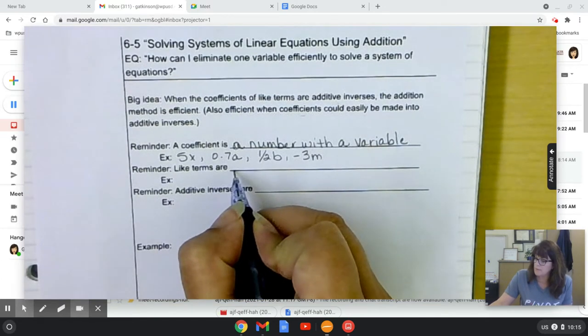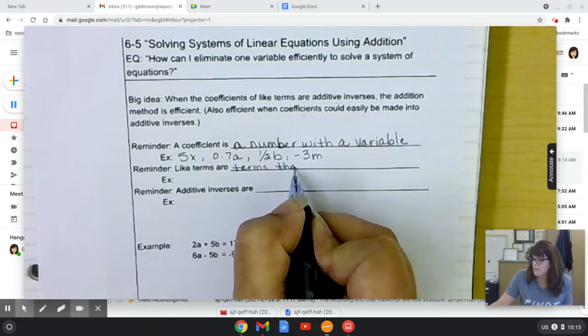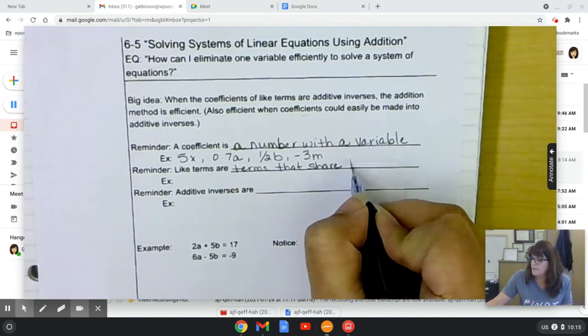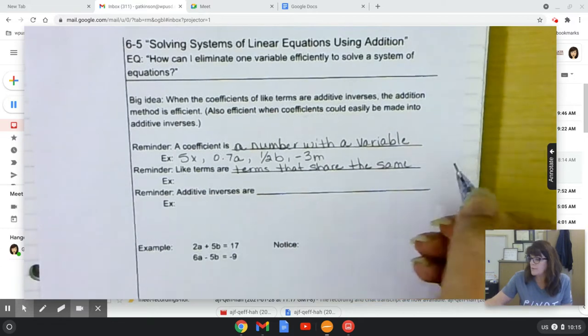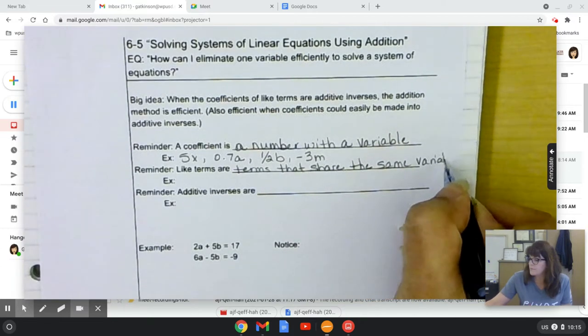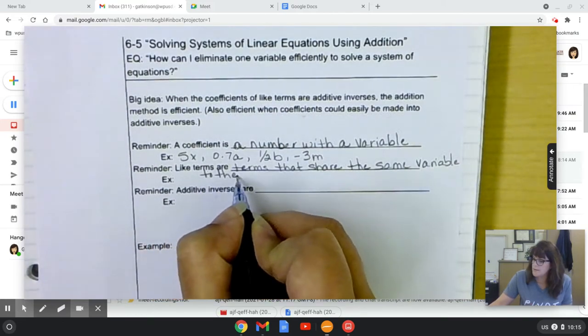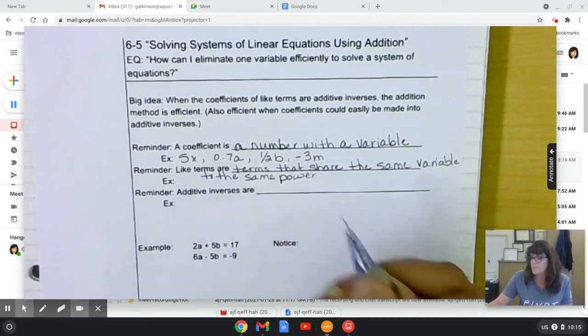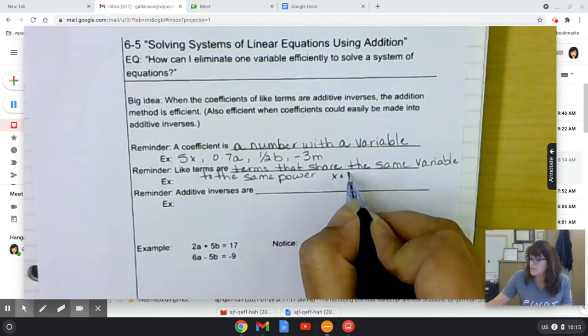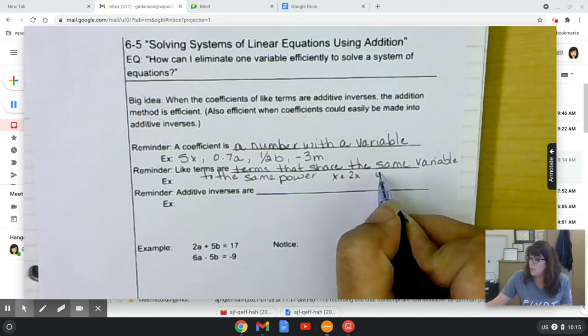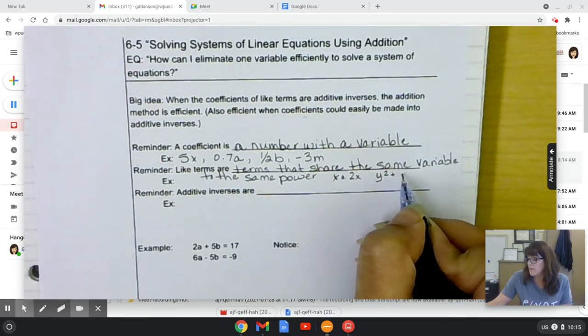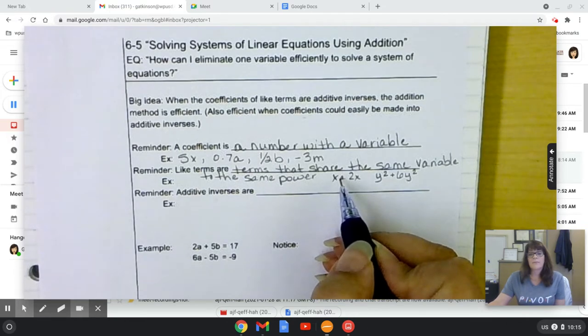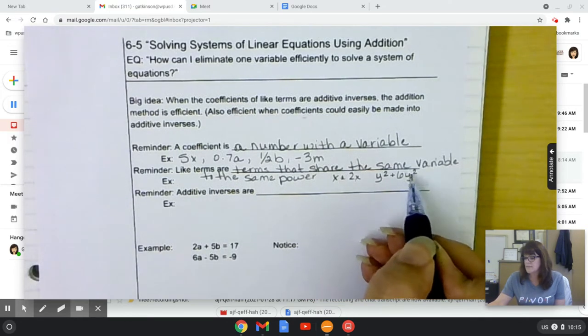Like terms are terms that share the same variable to the same power. So some examples could be x and 2x. Y squared plus 6y squared. But notice, if it has a variable, it has to be the same. Or if it has an exponent, it has to be the same.